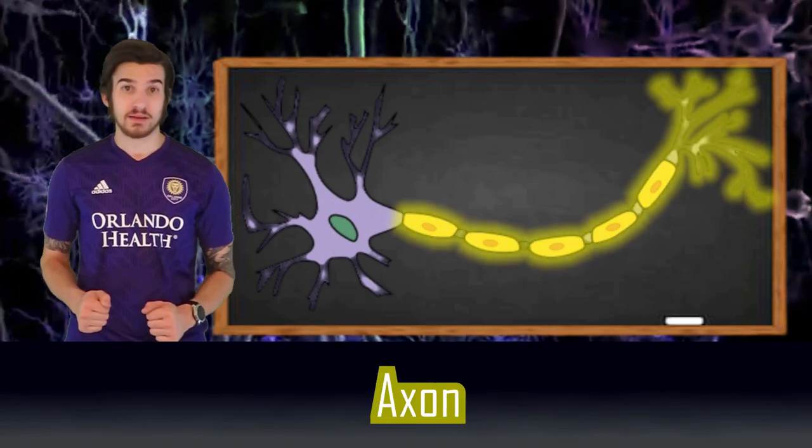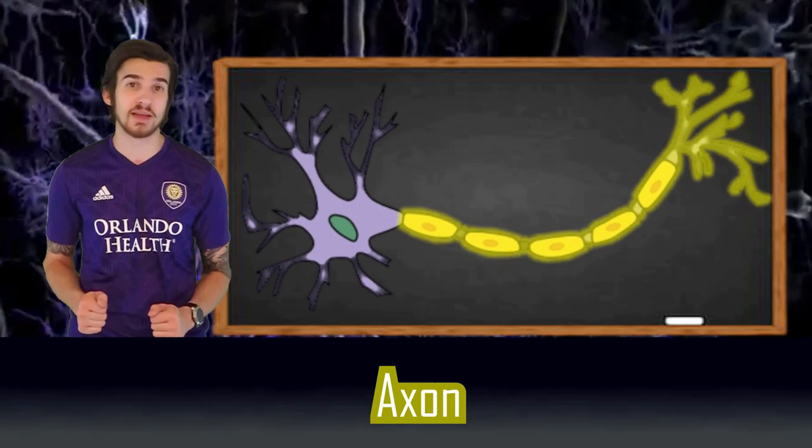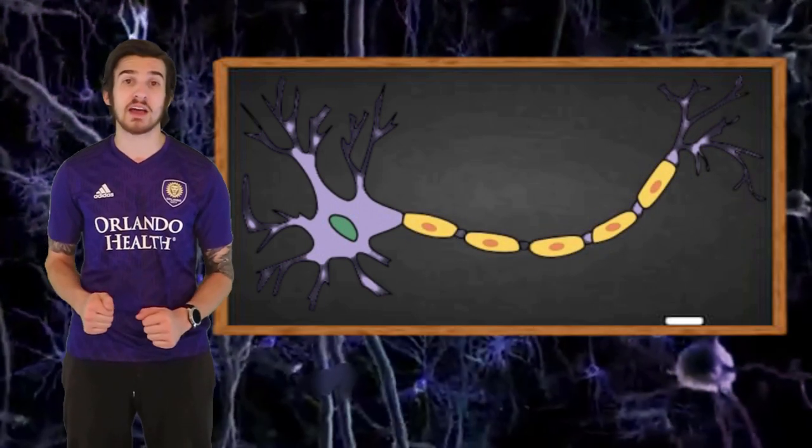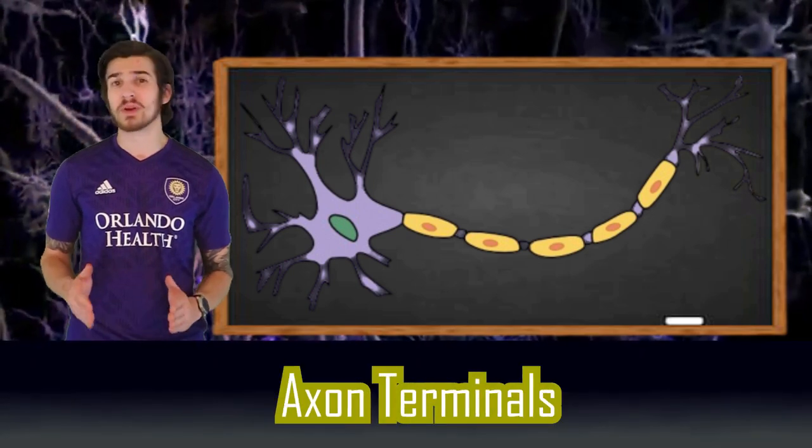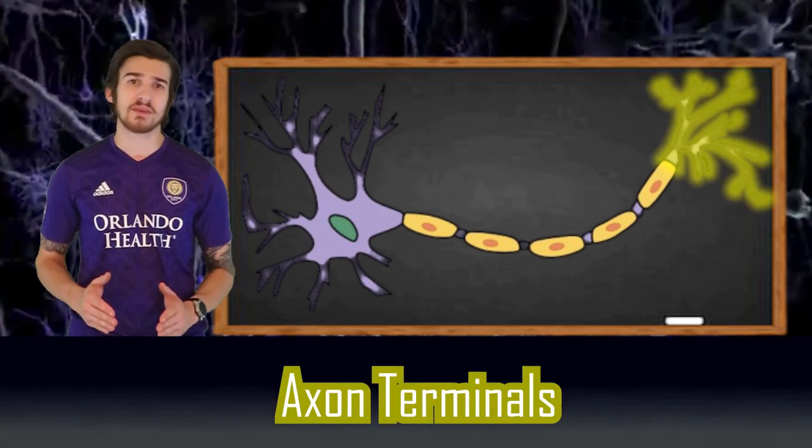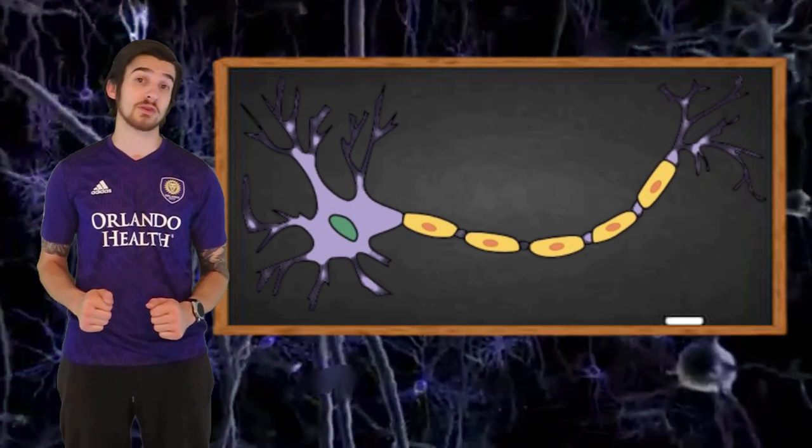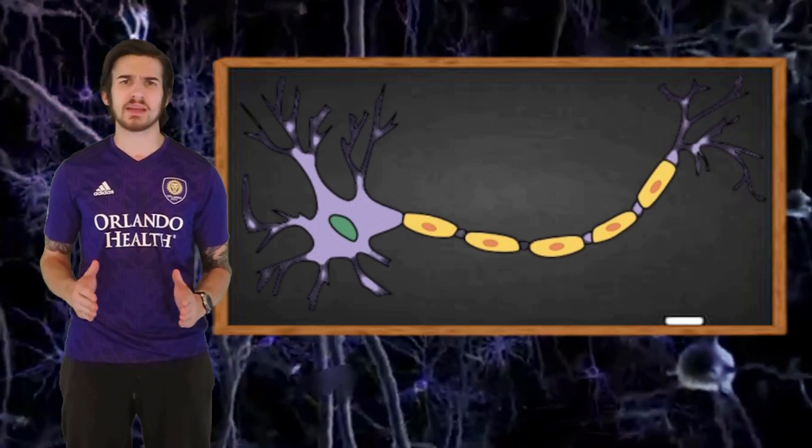Next we have our axon, which is responsible for carrying the neuron's message as well as sending it off to our next neuron. At the tip of our axon, we have the axon terminals. When a message is being sent, the synaptic vesicles located in the axon terminal release brain chemicals known as neurotransmitters into the synaptic gap.